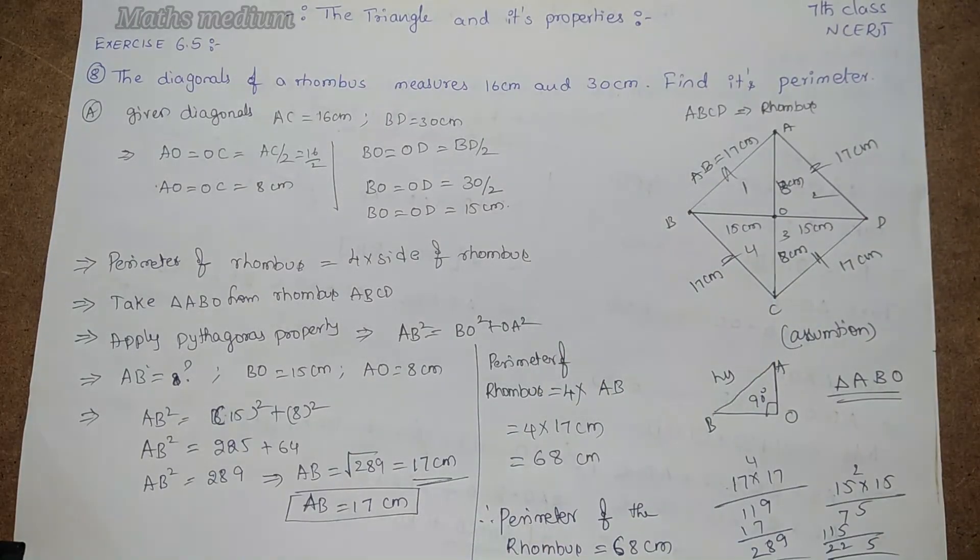This is about finding the perimeter of a rhombus by using Pythagoras property. I hope you understand. If you have any doubts, comment in the comment box. Click like, share my videos, and subscribe to my channel. Thank you.